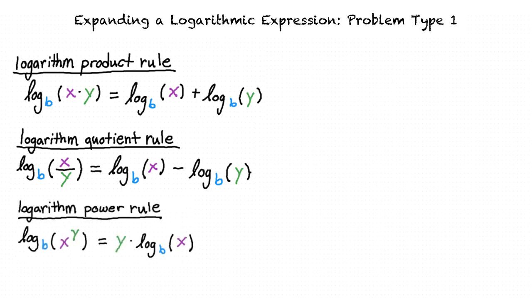The logarithm power rule says that the base b logarithm of x to the y power is equal to y times the base b logarithm of x. We can use these properties to solve problems where we have to expand logarithmic expressions.